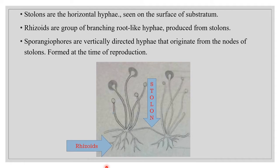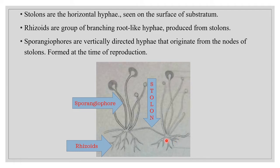Stolons are certain horizontally spreading hyphae which are less branched and are confined to the surface of the substrate. The stolon takes its origin from the mycelium which contacts with the substrate, and it grows for some distance and produces a node-like portion from which new stolons arise. Thus the stolons develop superficially over the substrate.